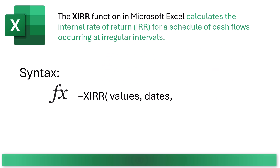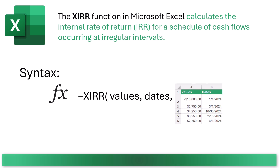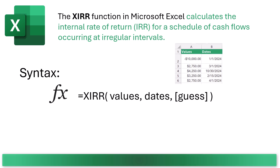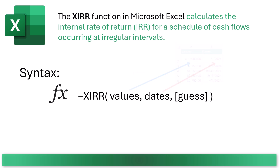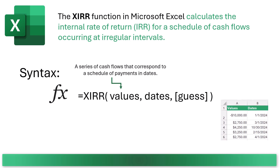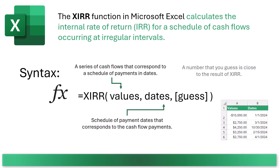Using the XIRR function in Excel is pretty straightforward. You need two arrays or ranges: one for the cash flows, and one for the corresponding dates. The syntax is: equals XIRR, and then in parentheses, values, dates, and then an optional argument, guess.